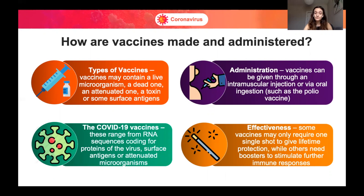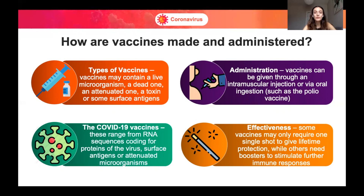Or it could be a toxin or some surface antigen specific to that particular pathogen. In terms of administration, vaccines can be given through an intramuscular injection, as in the arm, or via oral ingestion, such as the polio vaccine. The COVID-19 vaccines range from RNA sequences coding for proteins of the virus to surface antigens or attenuated microorganisms, depending on the manufacturer.